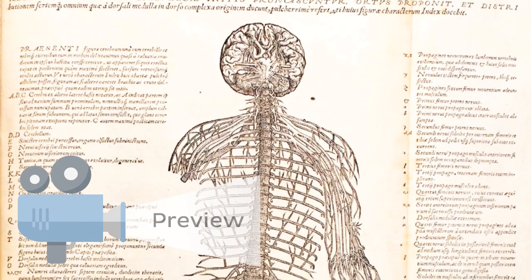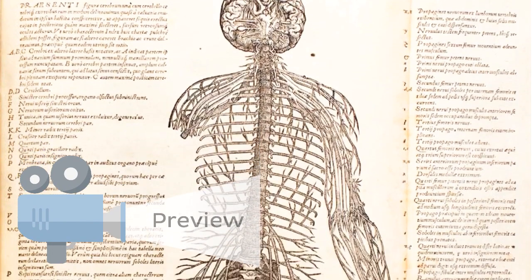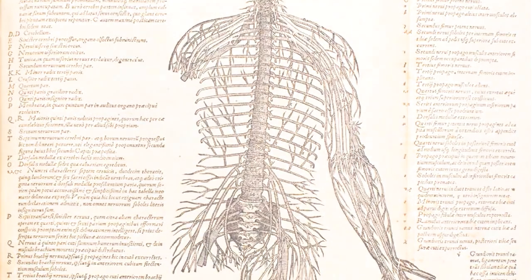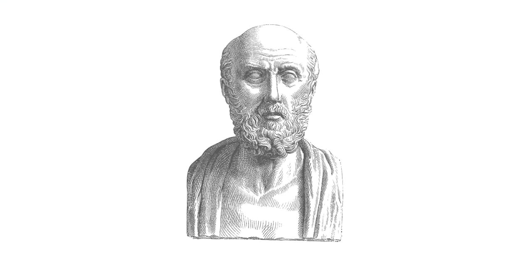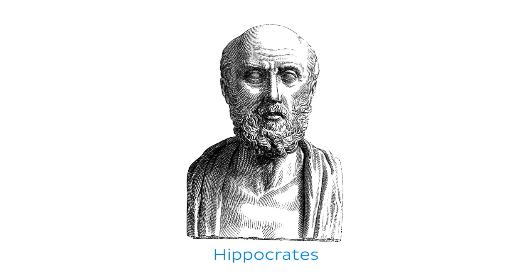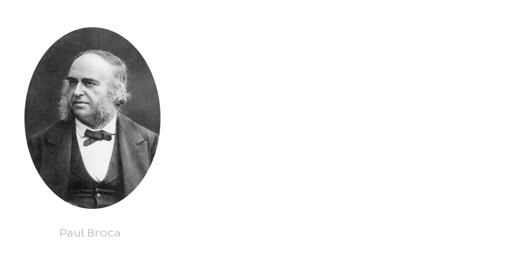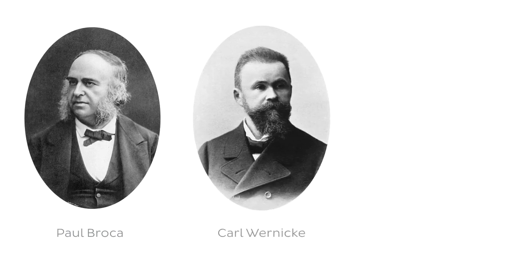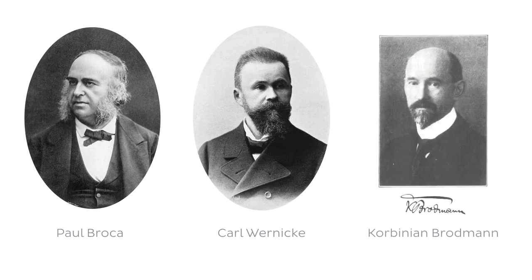Anatomists have been working to fully understand the brain and spinal cord since as far back as the 4th century BC. From Hippocrates in ancient Greece, to well-known 20th century anatomists such as Paul Broca, Karl Wernicke, and Corbinian Brodmann. Some of these names may already sound familiar because certain regions of the brain are named after these individuals.